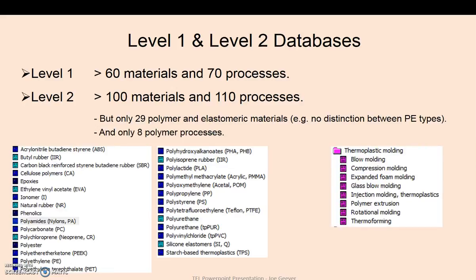But the limitation is there's only 29 polymers and elastomeric materials and only 8 polymer processes. So if we take, for instance, one of the simplest materials of all, which is polyethylene, and we look down here at polyethylene, the issue there is that there's only one grade of polyethylene highlighted. Whereas we know from our studies to date that there's a number of different grades of polyethylene. So straight away there's a large limitation. So we're going to look at polyethylene in further detail at a later stage.